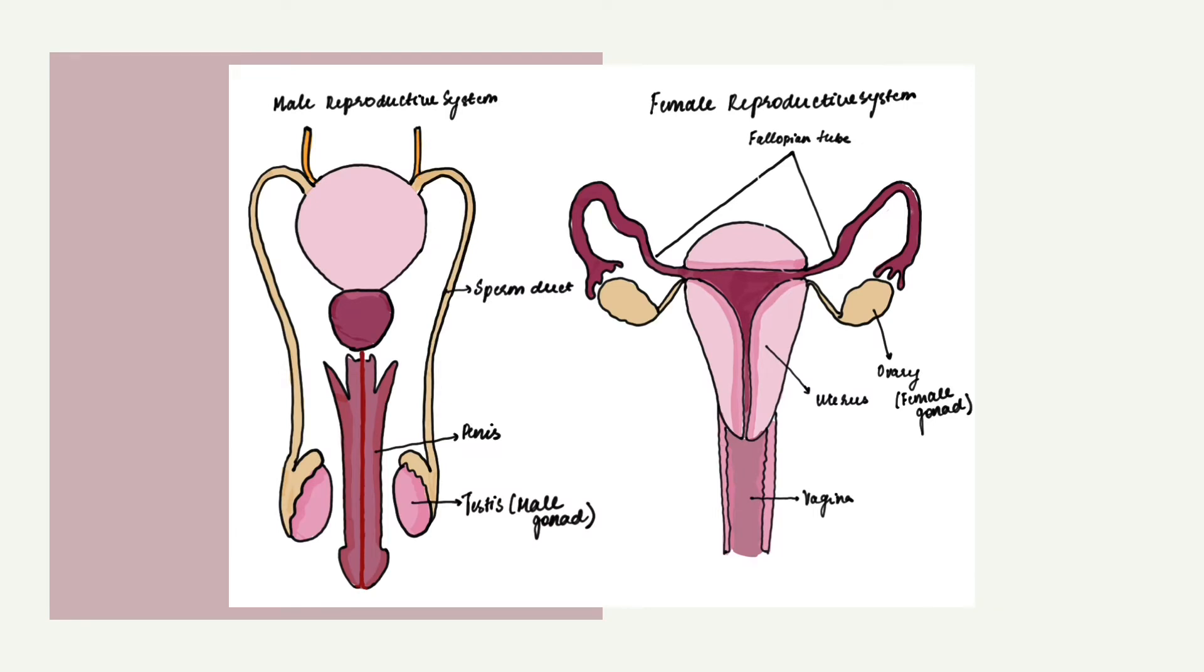The male reproductive system consists of the testicles, the duct system which is made up of the epididymis and the vas deferens, the accessory glands which include the seminal vesicles and prostate gland, and the penis.